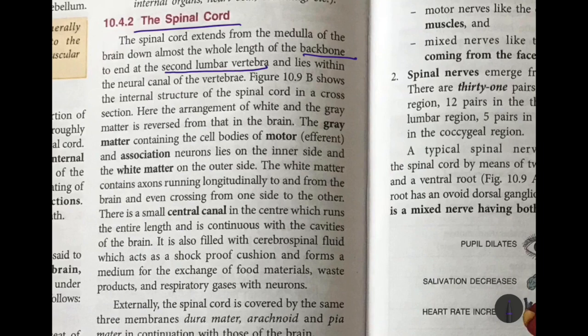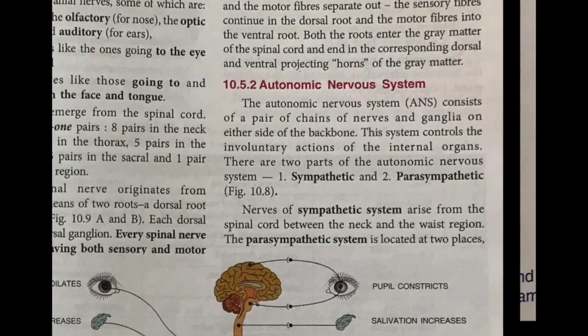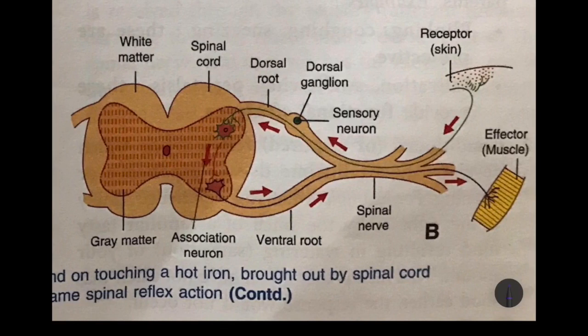The spinal cord is protected by the backbone, lying inside the neural canal of the vertebrae. When we talk about the internal structure of the spinal cord, you will see that the arrangement of the white and gray matter is opposite to that in the brain. In the brain, the gray matter lies on the outside and white matter inside.